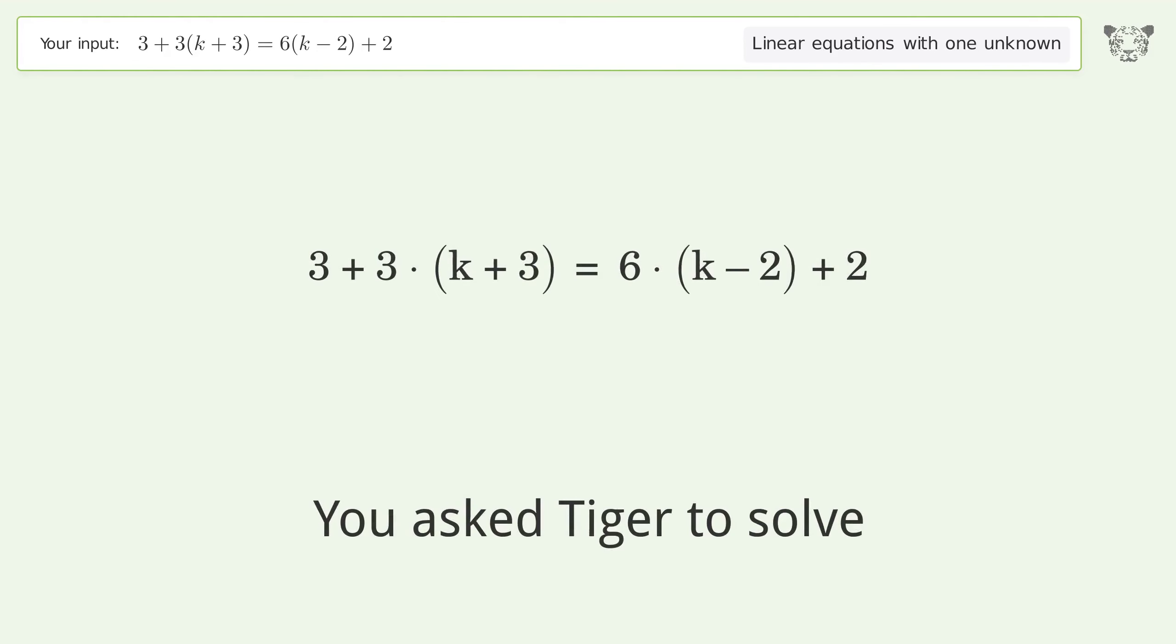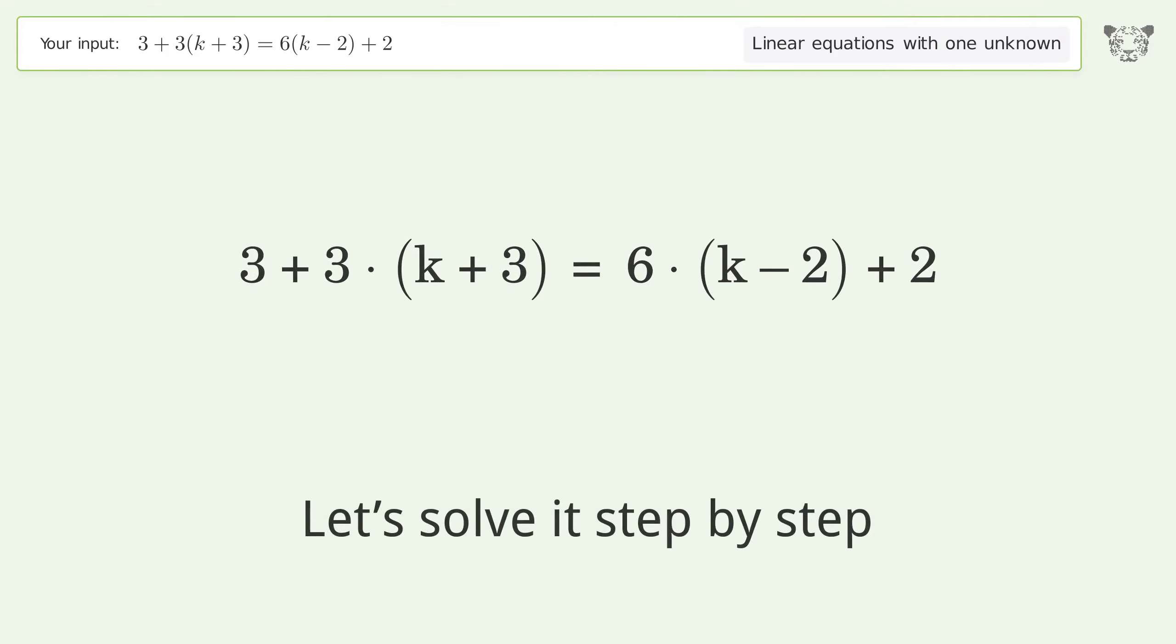You asked Tiger to solve this. It deals with linear equations with one unknown. The final result is k equals 22 over 3. Let's solve it step by step.